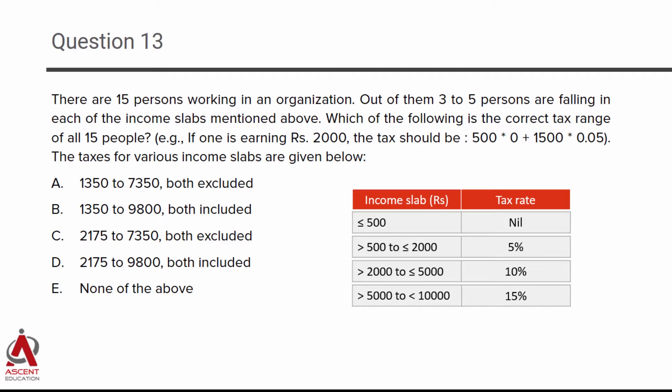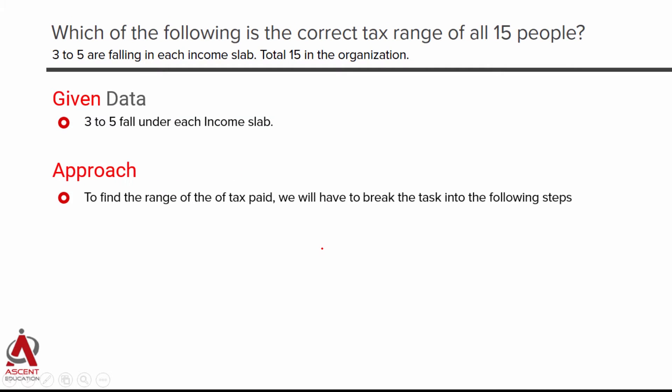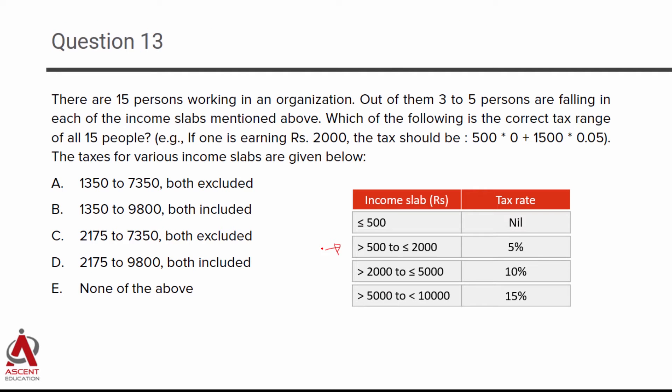There are two layers to this problem. First, you need to compute what the minimum and maximum tax will be for each slab — these are all different income slabs. Second, after that, you compute the lowest and highest total tax paid by all 15 of them. We will work through them one by one.